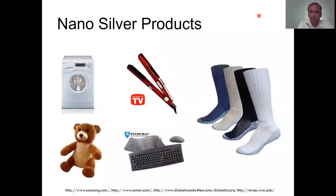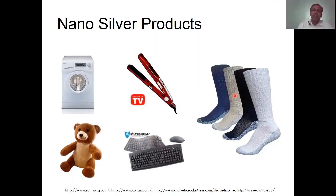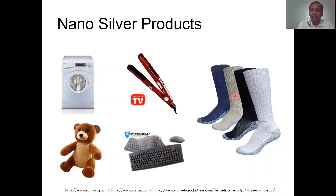Here we will discuss nano silver products. These are products based on nanotechnology in which silver nanoparticles have been used. For example, socks — when a person wears socks for a few hours, there is a foul smell due to microbial growth. To stop that smell, silver nanoparticles are added to the fiber. Since silver nanoparticles have antimicrobial properties, they inhibit the growth of microbes, stopping the foul smell and allowing socks to be worn for a longer time. Silver nanoparticles are also used in water treatment and many other applications.